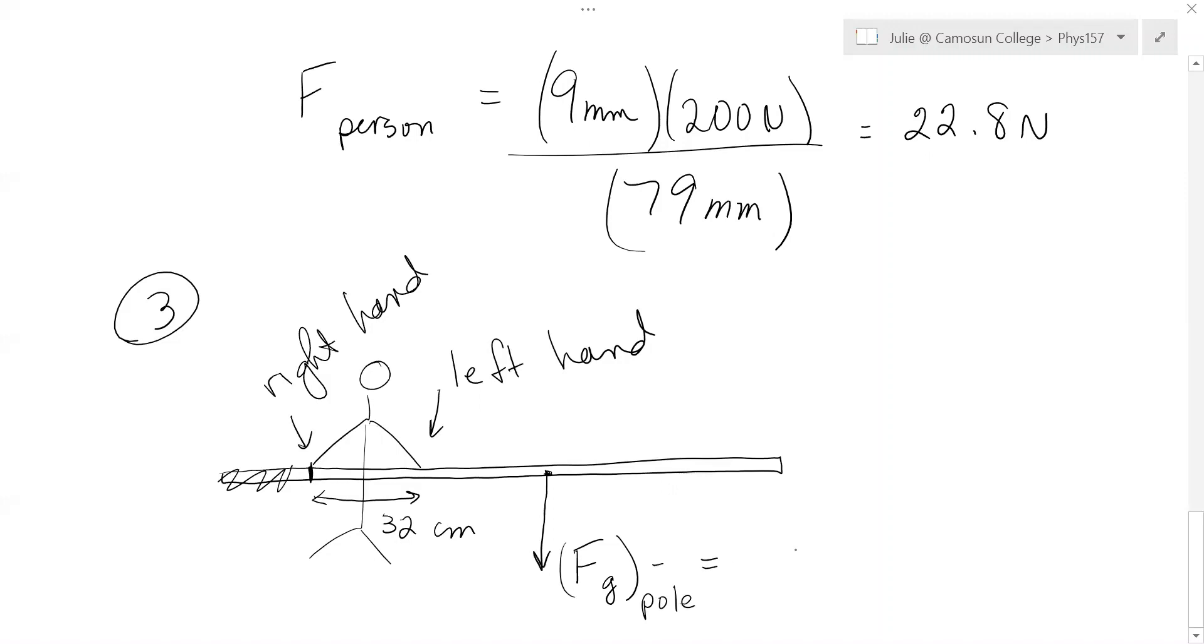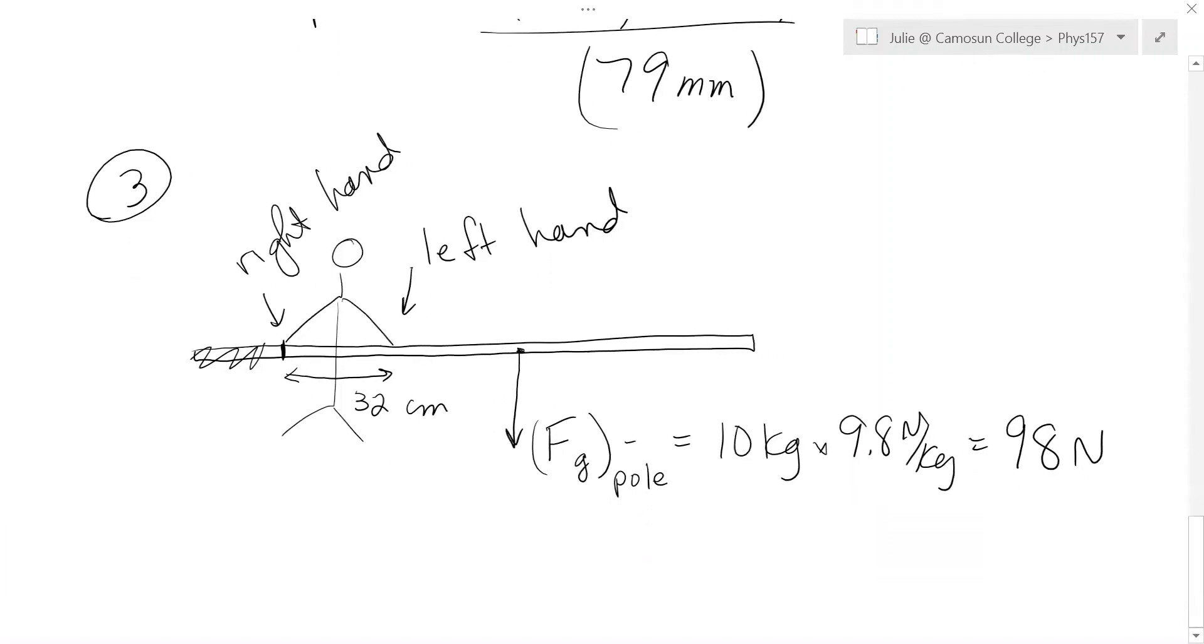Because the center mass of the pole, it says a uniform pole, the force of gravity is here due to the pole. Fg pole is equal to the mass of the pole, which is 10 kilograms, times 9.8 newtons per kilogram. So we've got 98 newtons here. Now the question is, which way are the forces on these hands? Up or down? Or how you can figure that out? Well, think about the right hand just being stationary.